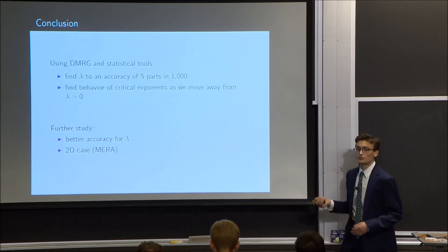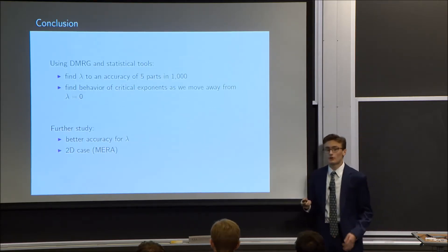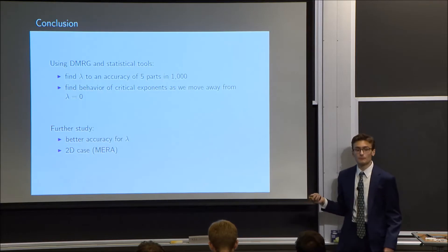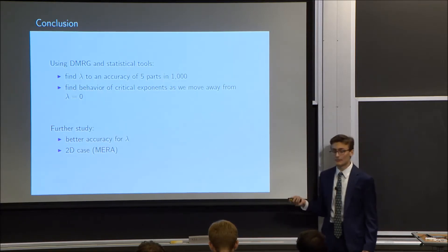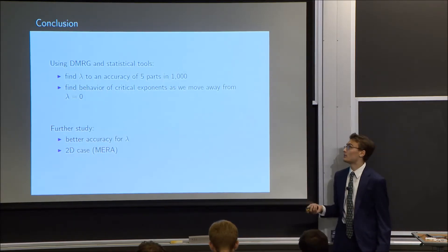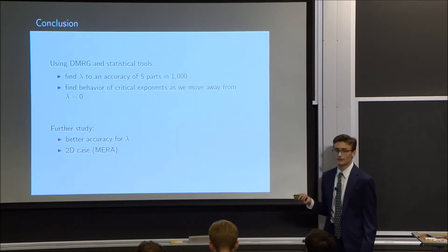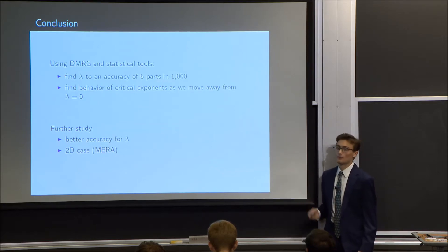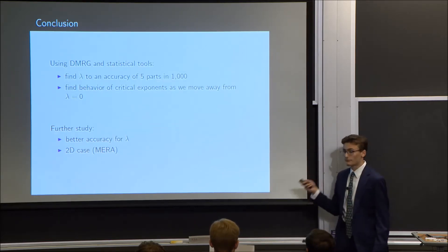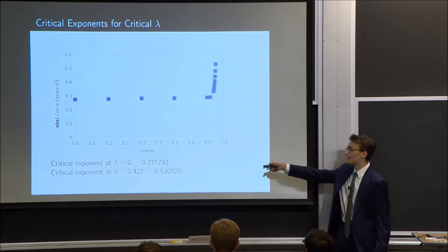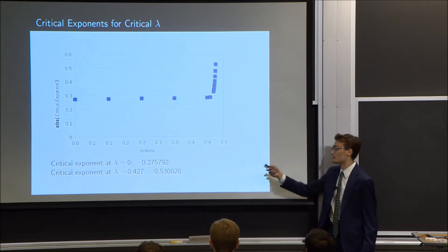In conclusion, using DMRG and statistical tools, we were able to pinpoint the value of lambda at which the tricritical quantum Ising model stops being critical to an accuracy of five parts in 1,000. Furthermore, we were able to find the behavior of the critical exponent as we increase lambda from 0.